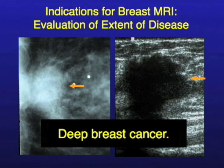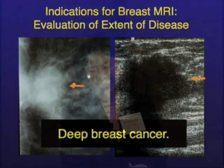And this is an ultrasound image showing the cancer here — this dark black spot. The question the clinician had, or the surgeon, was: is there chest wall invasion? Because we know the cancer is very deep, and we're not really seeing the back end of it on the mammogram. You just can't get back that far because the patient's chest wall is in the way.